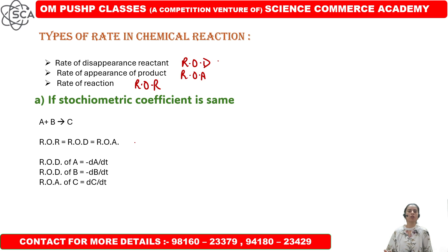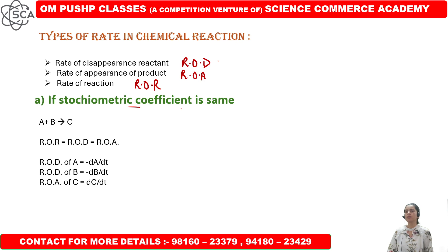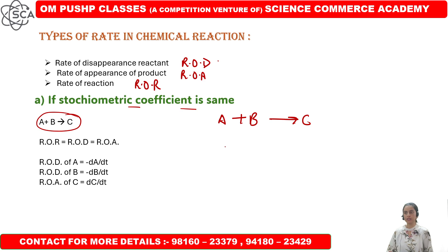Now, looking at rate of reaction, there are three things. We will look at two cases. When the stoichiometric coefficient is the same, we have a reaction A plus B gives rise to C. The rate of reaction is equal to the rate of disappearance and the rate of appearance.